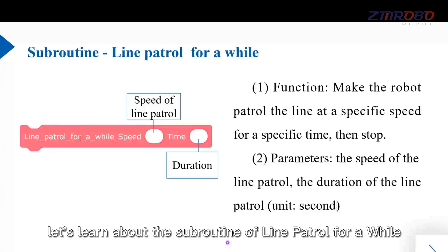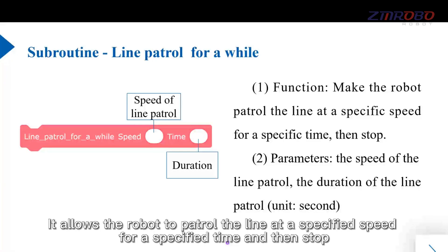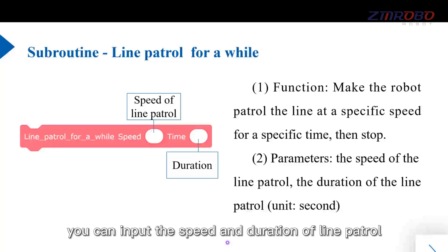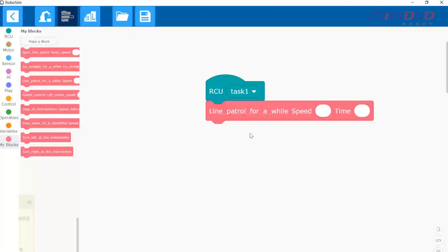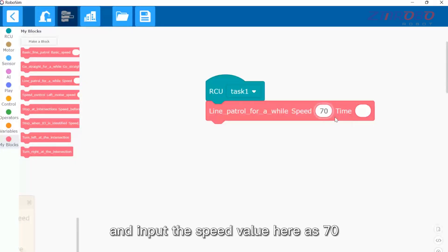Next let's learn about the subroutine of line patrol for a while. It allows the robot to patrol the line at a specified speed for a specified time and then stop. In its call module you can input the speed and duration of line patrol.